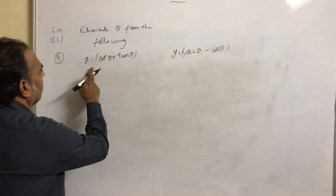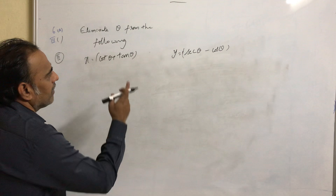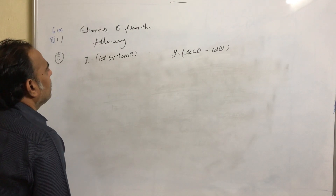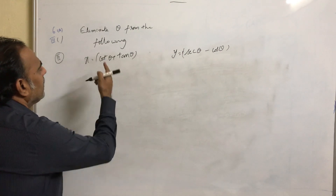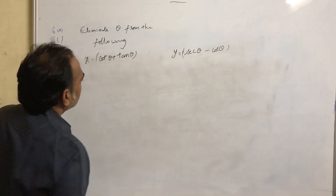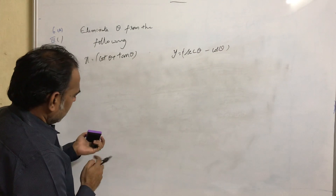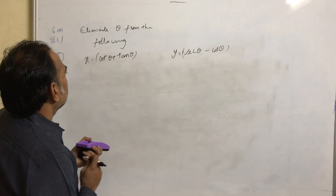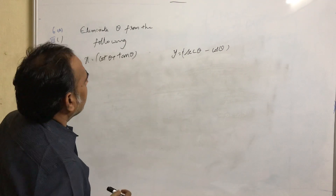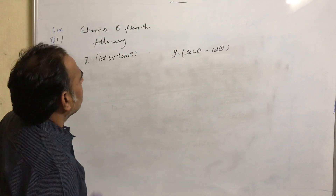The given problem is x equal to cot theta plus tan theta, and y equal to secant theta minus cos theta. We need to eliminate theta from the following. If you look at x and y, there is no direct relationship between x and y. So in this case, what we will do is try some combinations like x plus y, x minus y, and x into y.